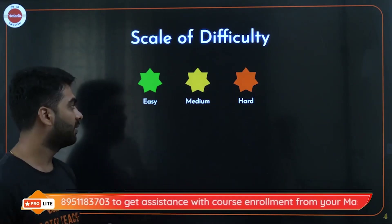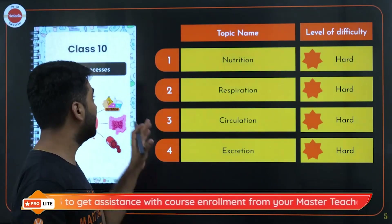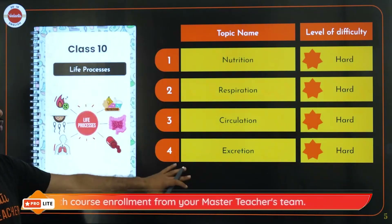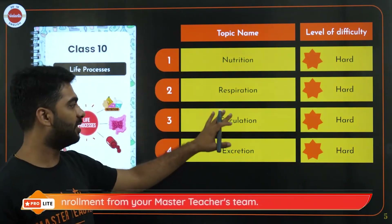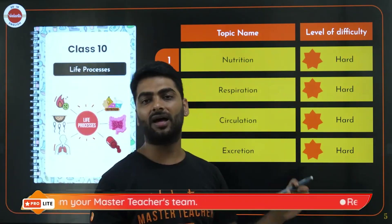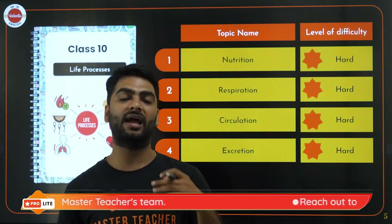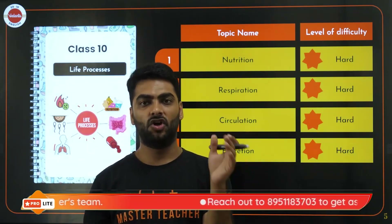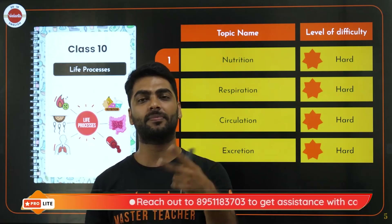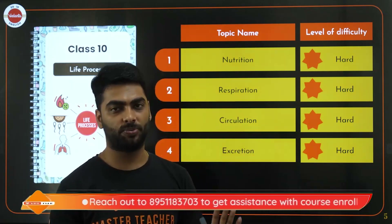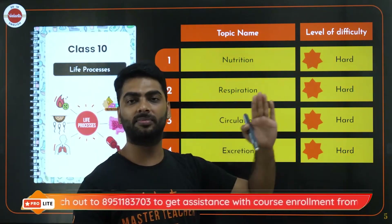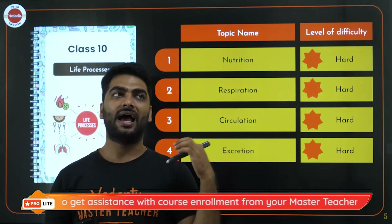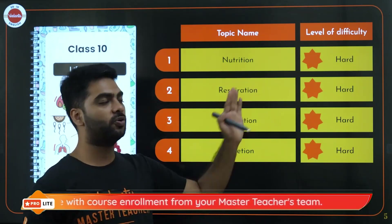Under Life Processes we have four processes: nutrition, respiration, circulation, and excretion. All of them are a little difficult because they are advanced versions of what you learned in Grades 6, 7, and 8 — two steps ahead of those processes. But with different tips and tricks, this gets a little easier.